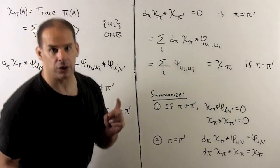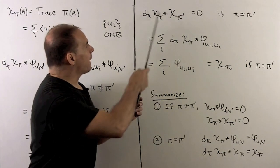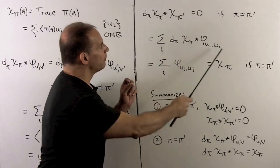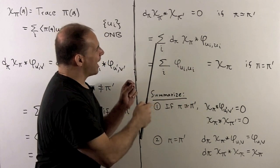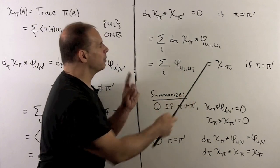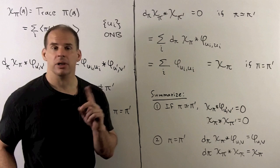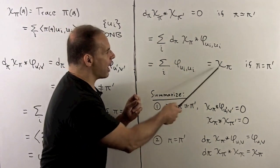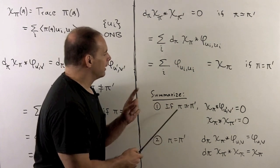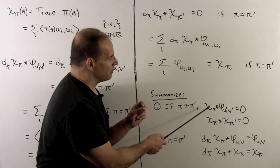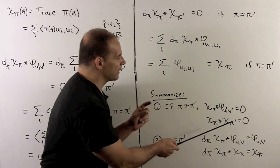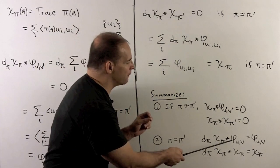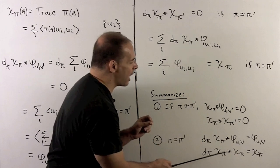Similar idea for convolution of characters: scale by the dimension; if they are inequivalent, we get zero; if they are equal, we write one as a sum of matrix coefficients and apply the previous formula. We just return the matrix coefficient and, when we take the sum, we get our character back. To summarize: for inequivalent representations, convolution of character with matrix coefficient is zero, and character with character is zero. If they are equal, scale by the dimension: character with matrix coefficient returns the matrix coefficient, and character with character returns the character.